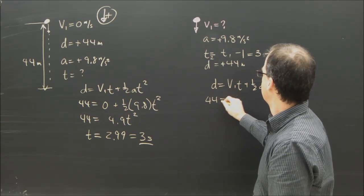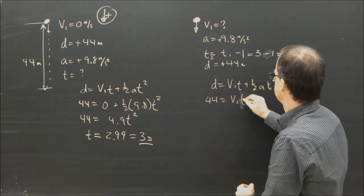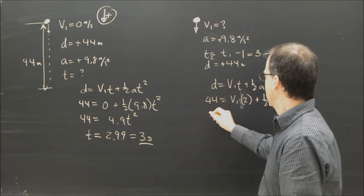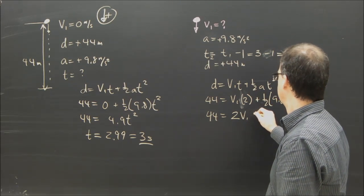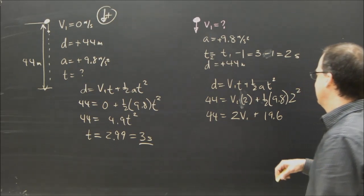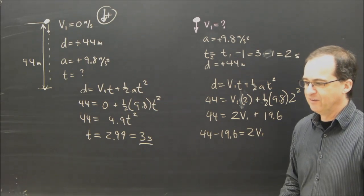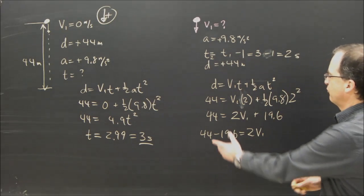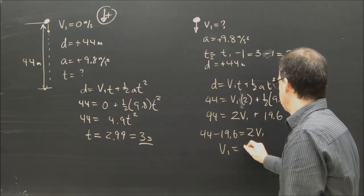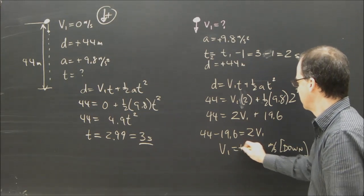So I've got 44 equals v1 times 2, plus one-half times 9.8 times 2 squared. So 44 equals 2v1 plus 19.6. And so 44 minus 19.6 equals 2v1. Solve 44 minus 19.6, get that number, divide by 2 — v1 is equal to 12.2 meters per second, and we should say down, because it comes out positive.